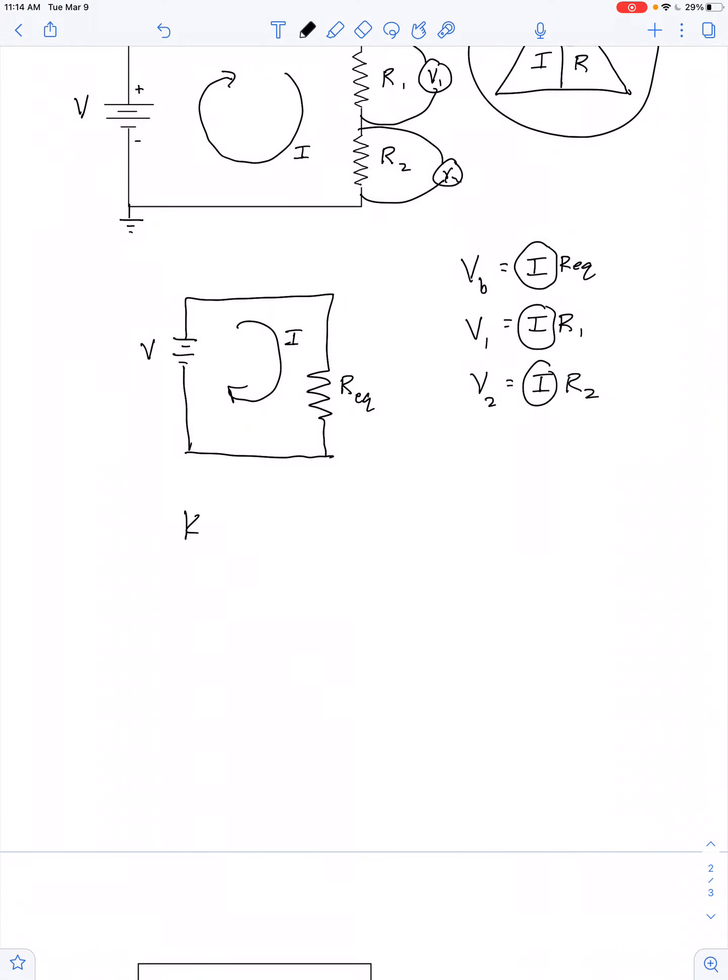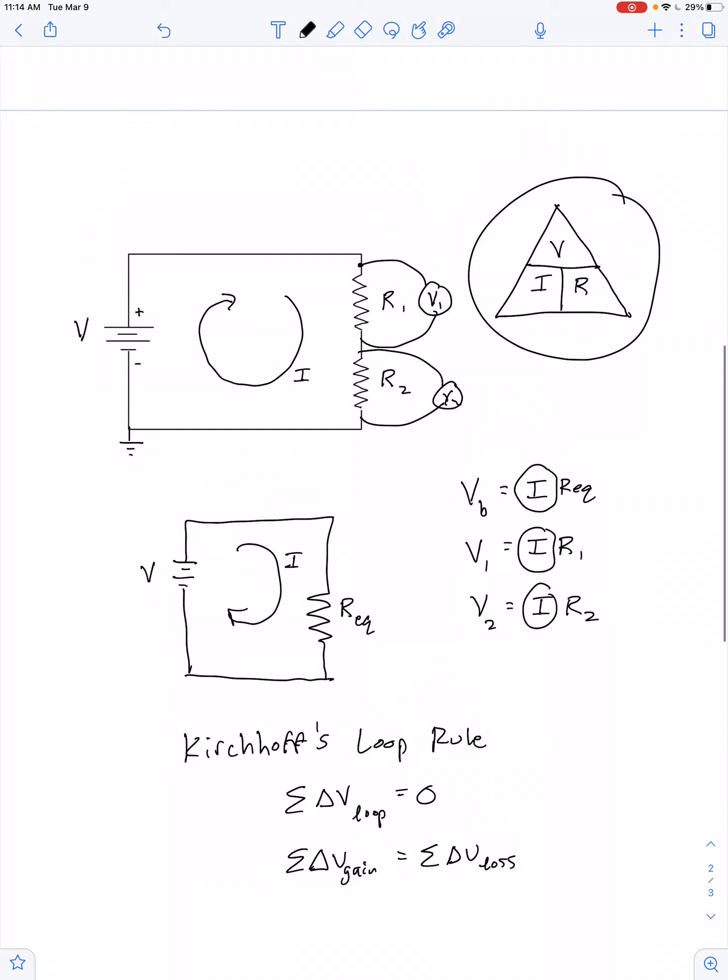So, let's invoke Kirchhoff's loop rule. Kirchhoff's loop rule says the net change in electric potential around any circuit loop is equal to zero. In other words, the total voltage gain has to equal the sum of all the voltage loss. So, if we pick a point like here, call it point P, there's a voltage gain from the battery, and then there's a voltage loss across the first resistor and another voltage loss across the second resistor.